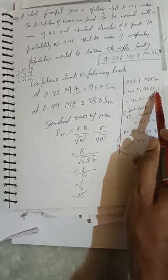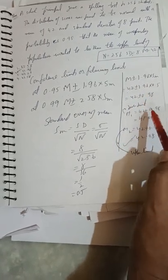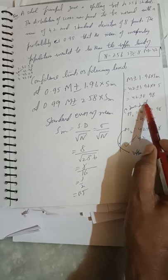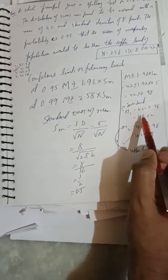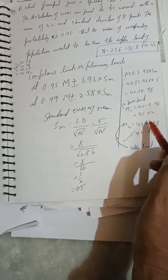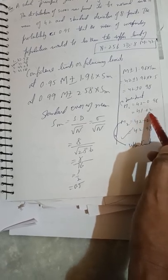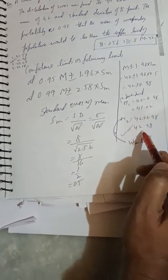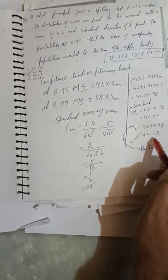So this is 42 ± 0.98. First we have the lower limit and then the upper limit. This gives us 41.02 as the lower limit and 42.98 as the upper limit.